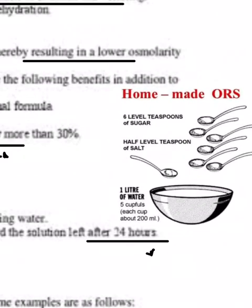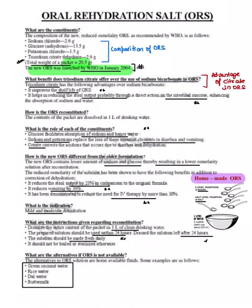If you don't have ORS, what will you do? There's homemade ORS - this is a favorite PSM or pediatric question. You use six level teaspoons of sugar, half level teaspoon of salt, add it to one liter of water and feed the child. Other alternatives that can be used: green coconut water, rice water, dal water, buttermilk.